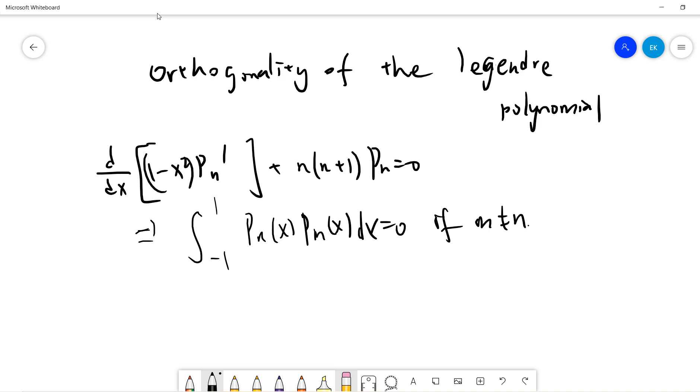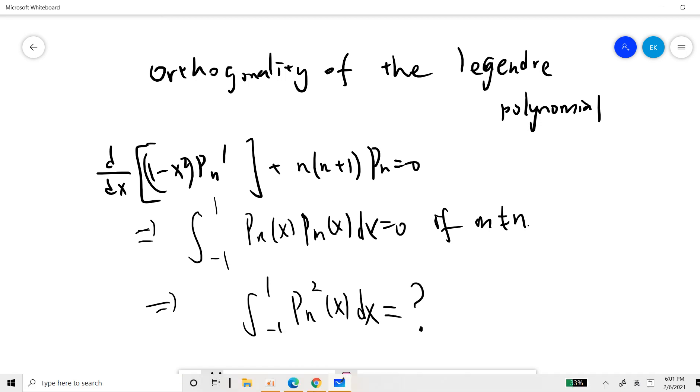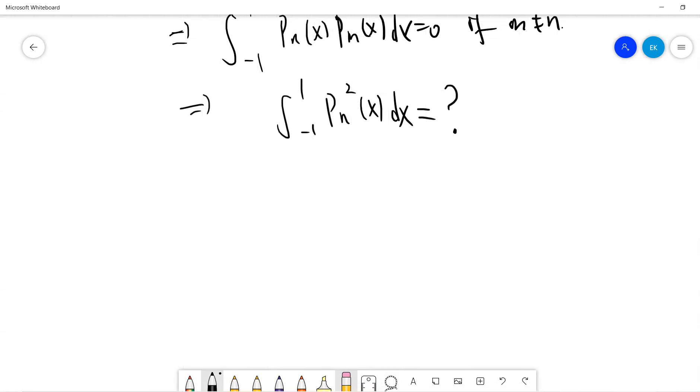So the only problem in the orthogonality of the Legendre polynomial is asking about what is this constant, right? Then only this constant is not trivial.